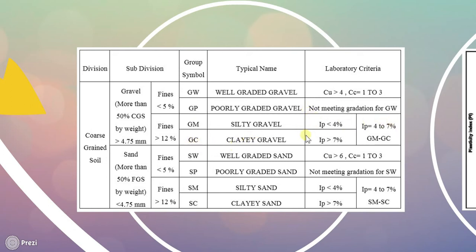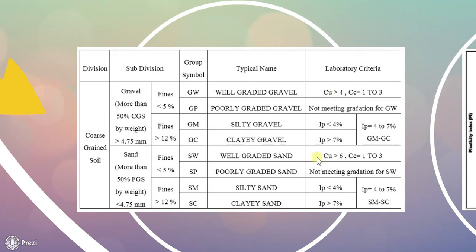For silty gravel (GM), the plasticity index (IP) should be less than 4%. If IP is between 4 to 7%, it is designated as GM-GC. If IP is greater than 7%, it is clay gravel (GC). For well graded sand (SW), Cu is required to be greater than 6 and Cc between 1 to 3. If these criteria are not met then it is poorly graded sand (SP).